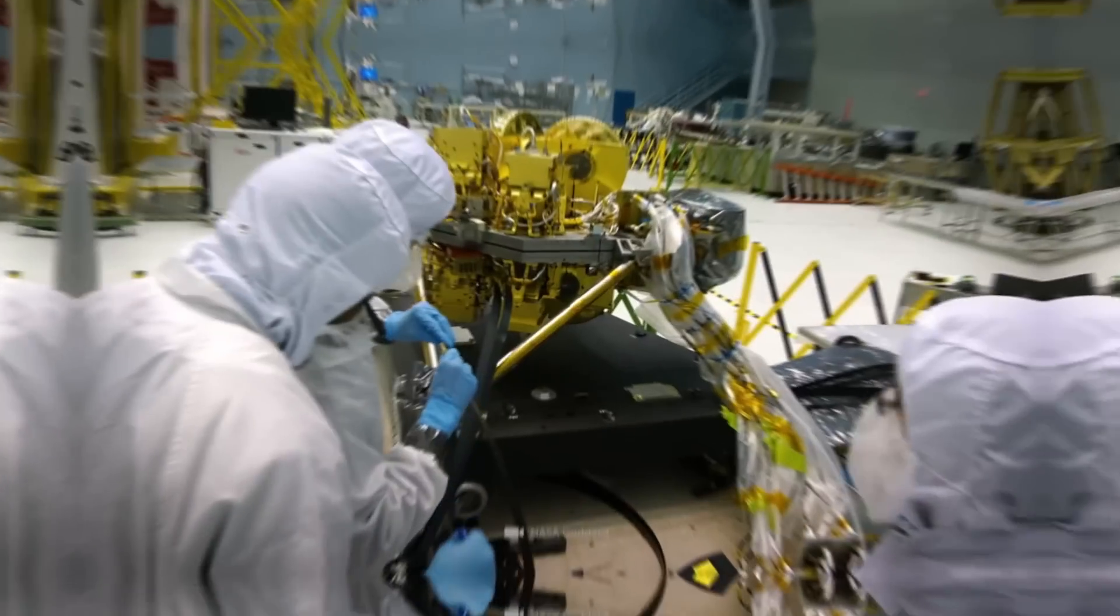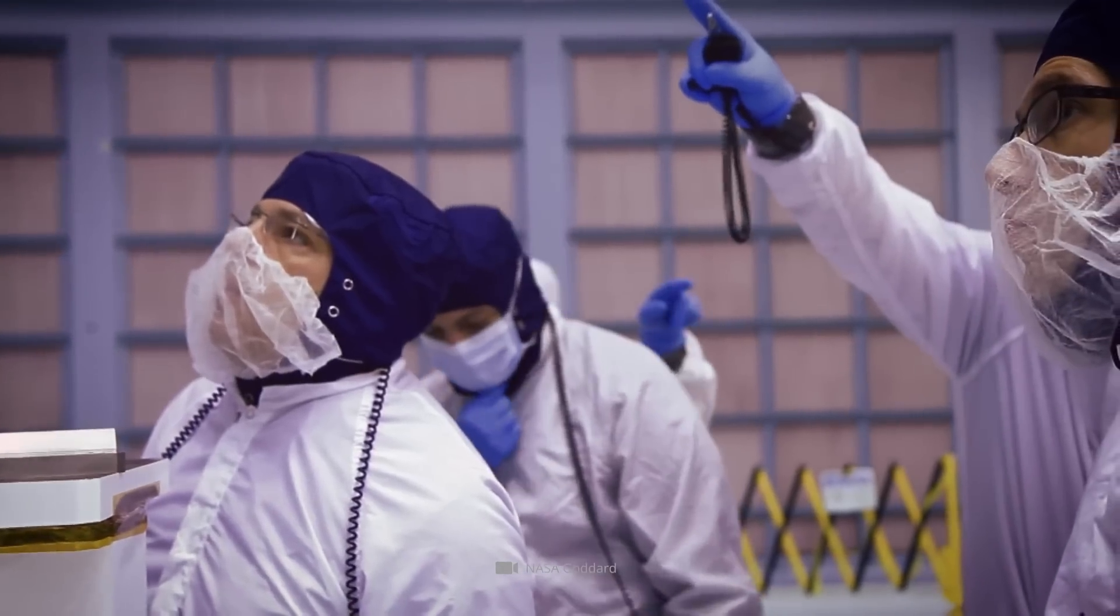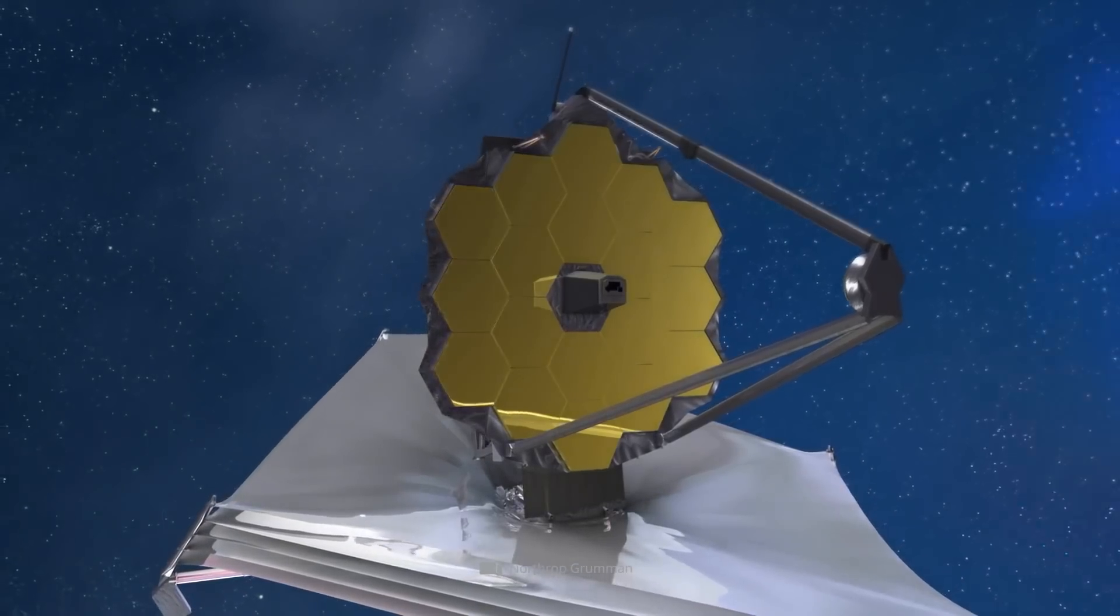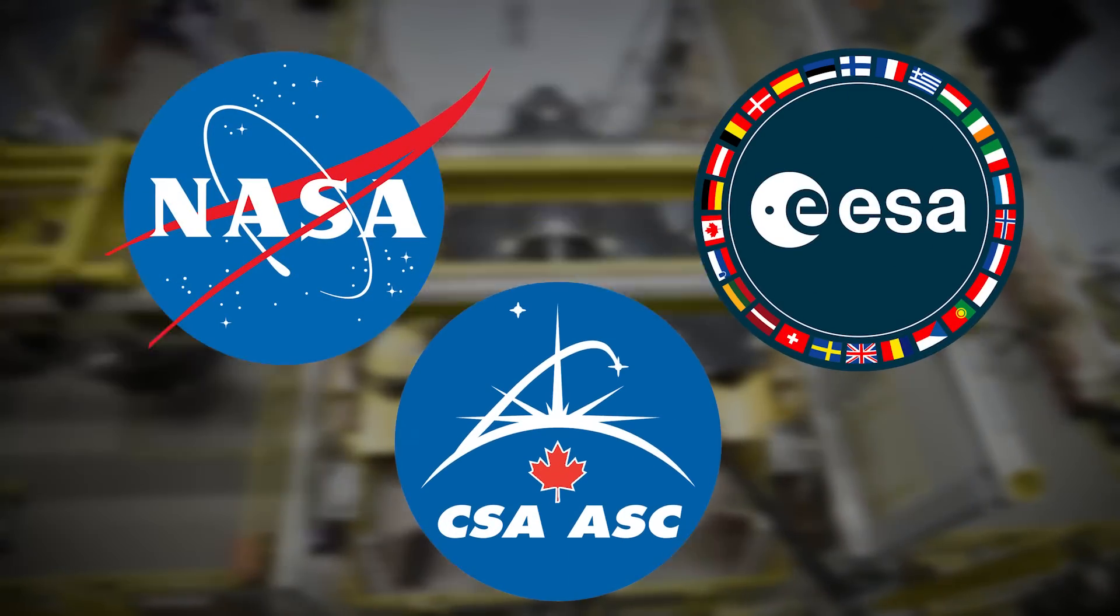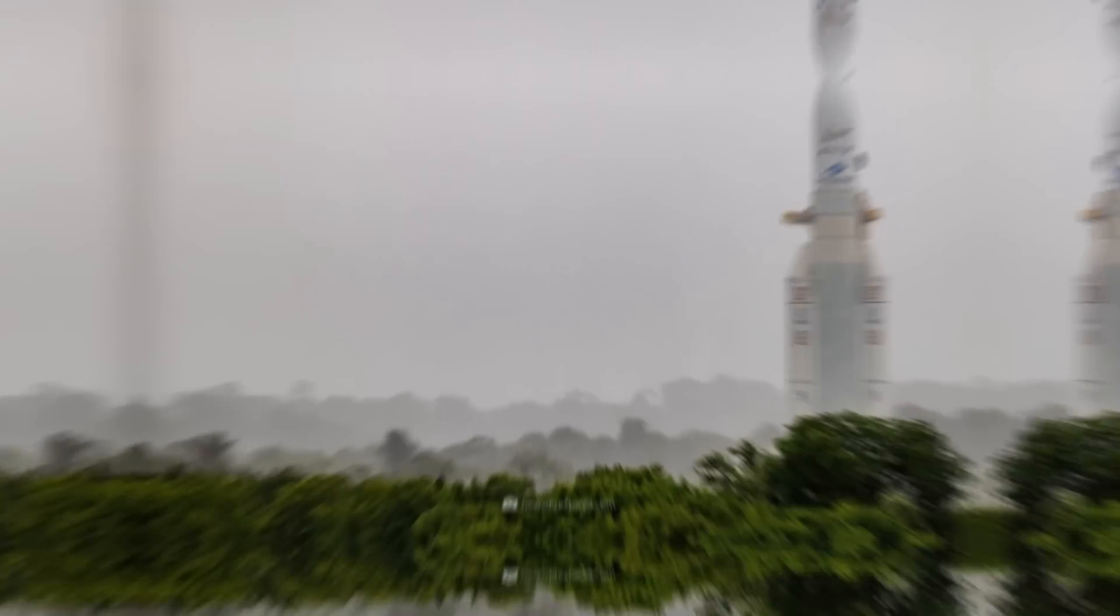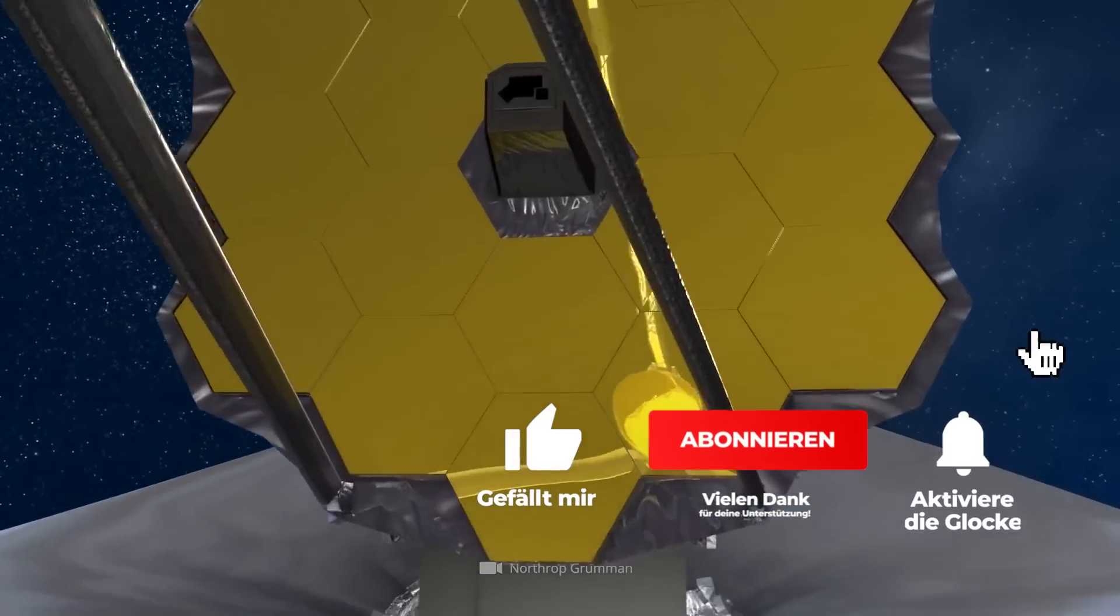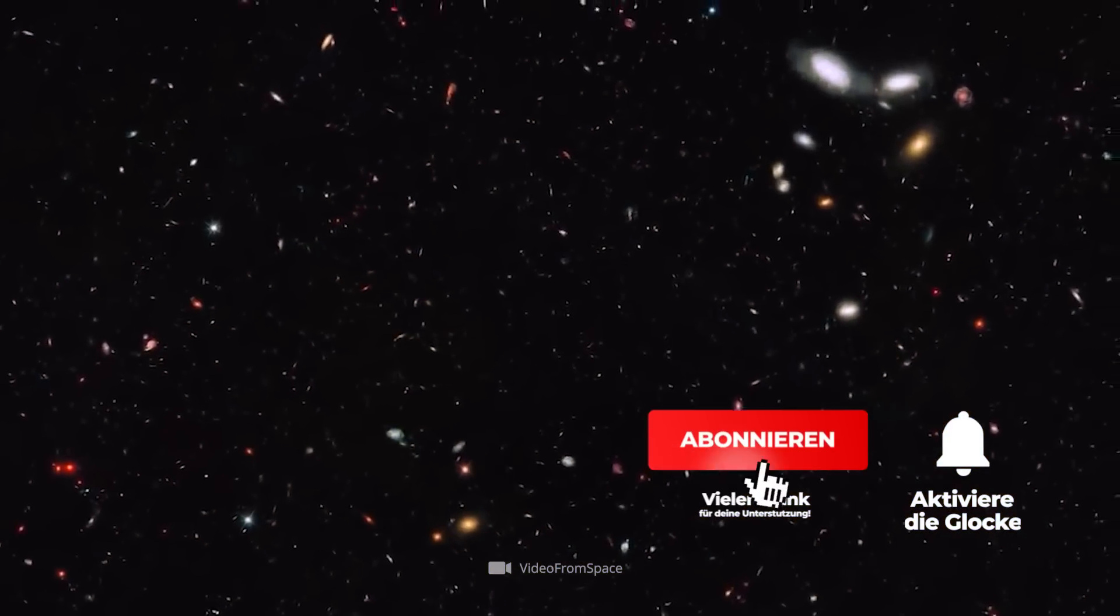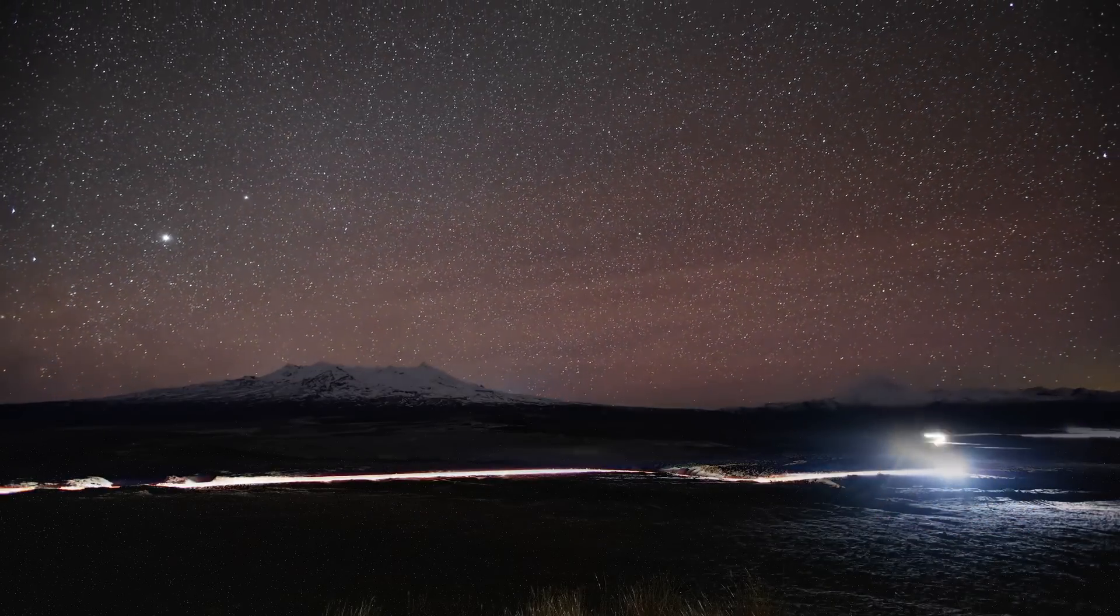James Webb is a project only very haltingly put on track, or let's better say, into space. As early as 1996, NASA, the European ESA, and the Canadian CSA began the ambitious project. Since 2007, the launch of the gigantic space telescope has been postponed again and again. But this year, the time had finally come. The billion-dollar space telescope sent its first images and never-before-seen impressions of space to Earth.